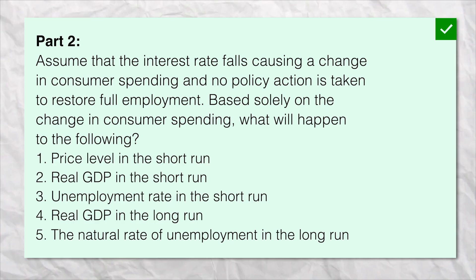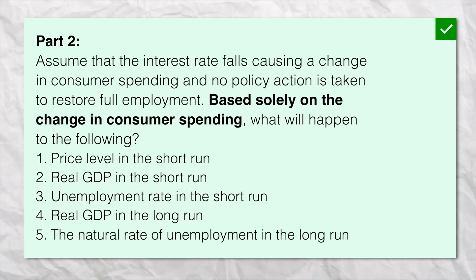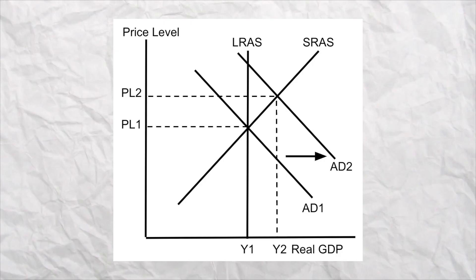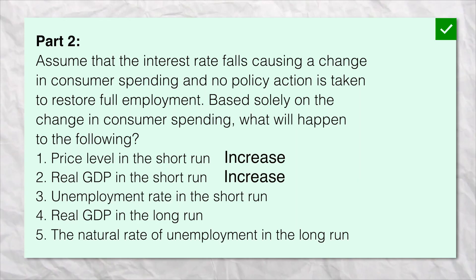But this question is telling you to ignore that. It says, based solely on the changes in consumer spending, what's going to happen to the following? So lower interest rates will increase spending and increase aggregate demand, so the price level will go up, real GDP will go up, and the unemployment rate will decrease. But that's all in the short run.